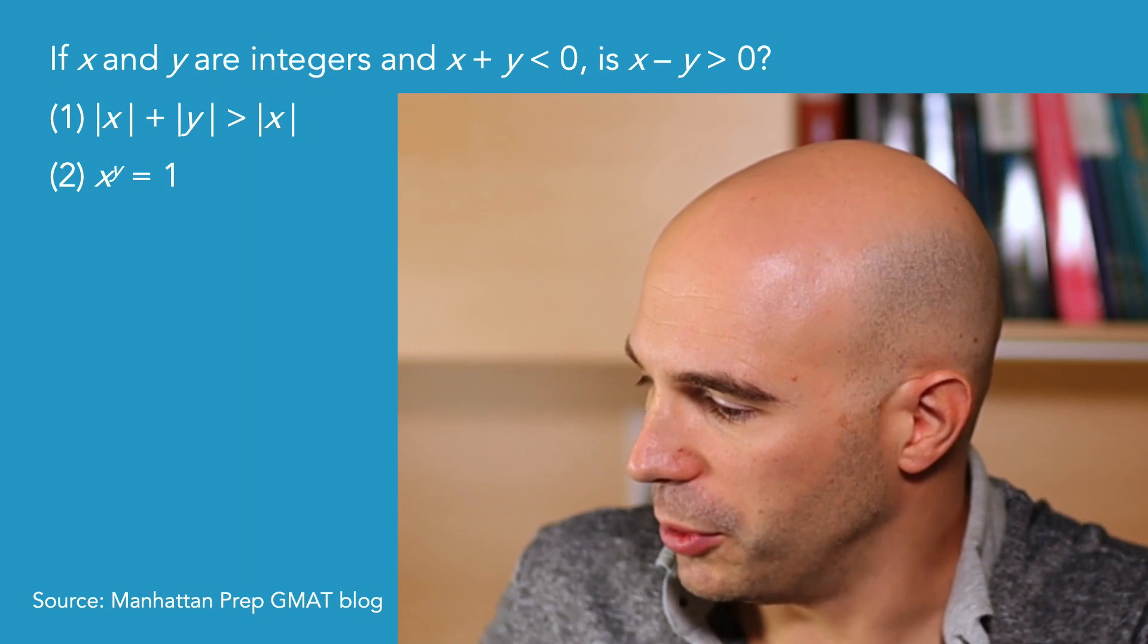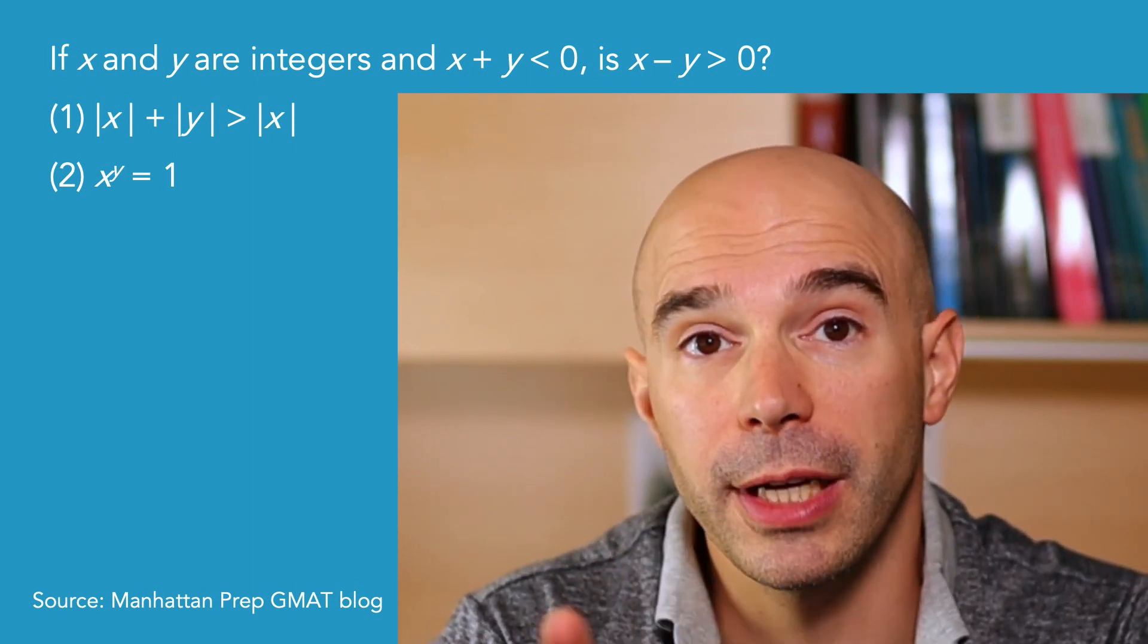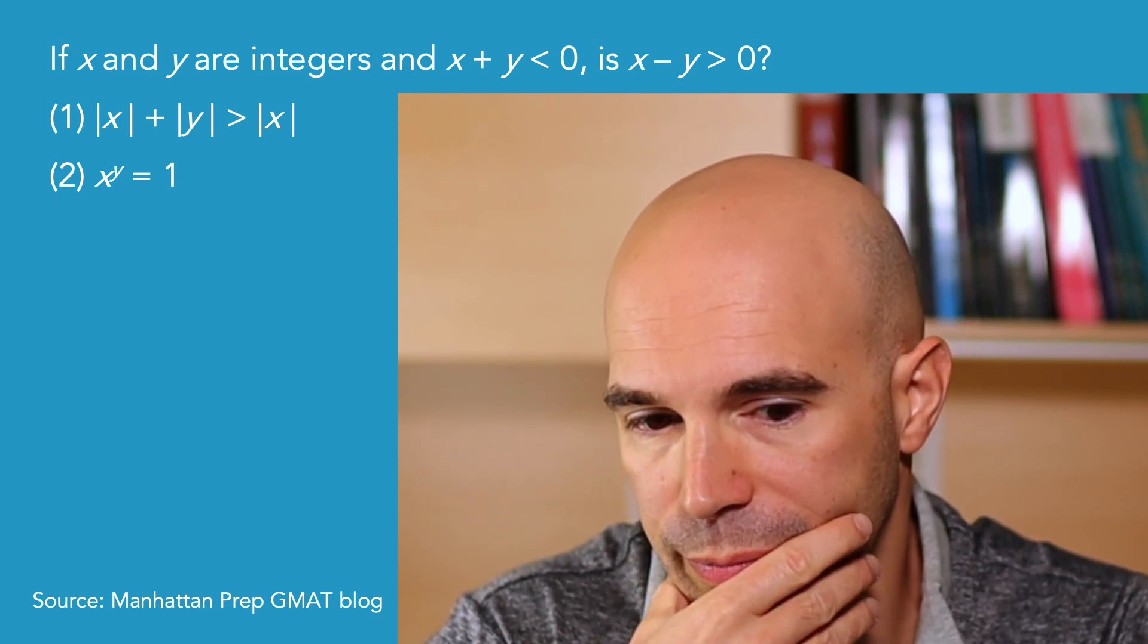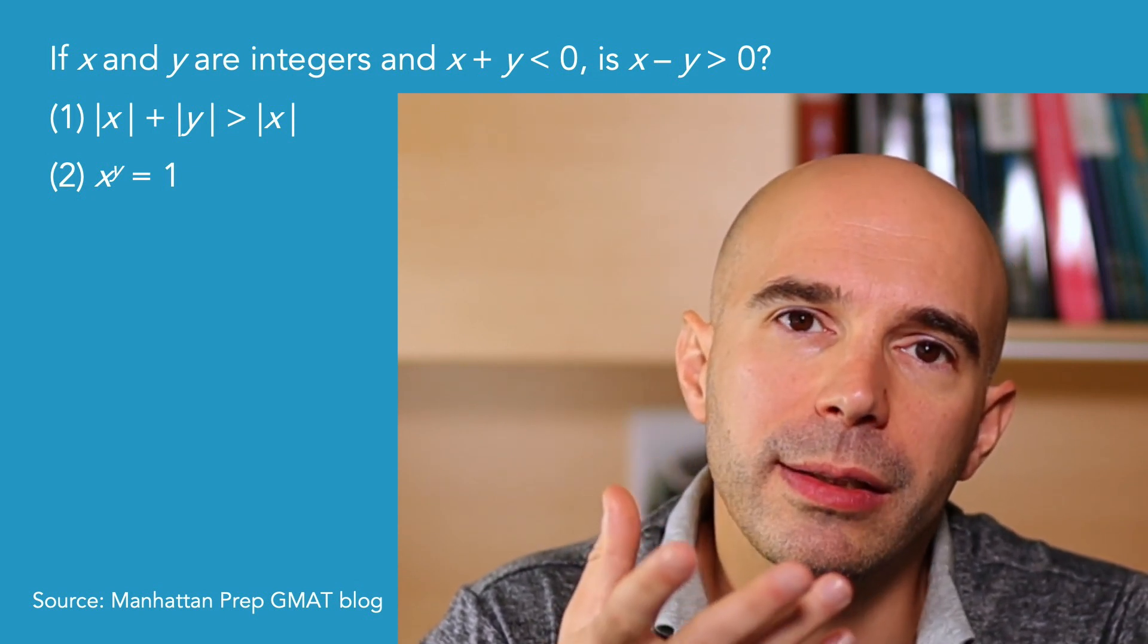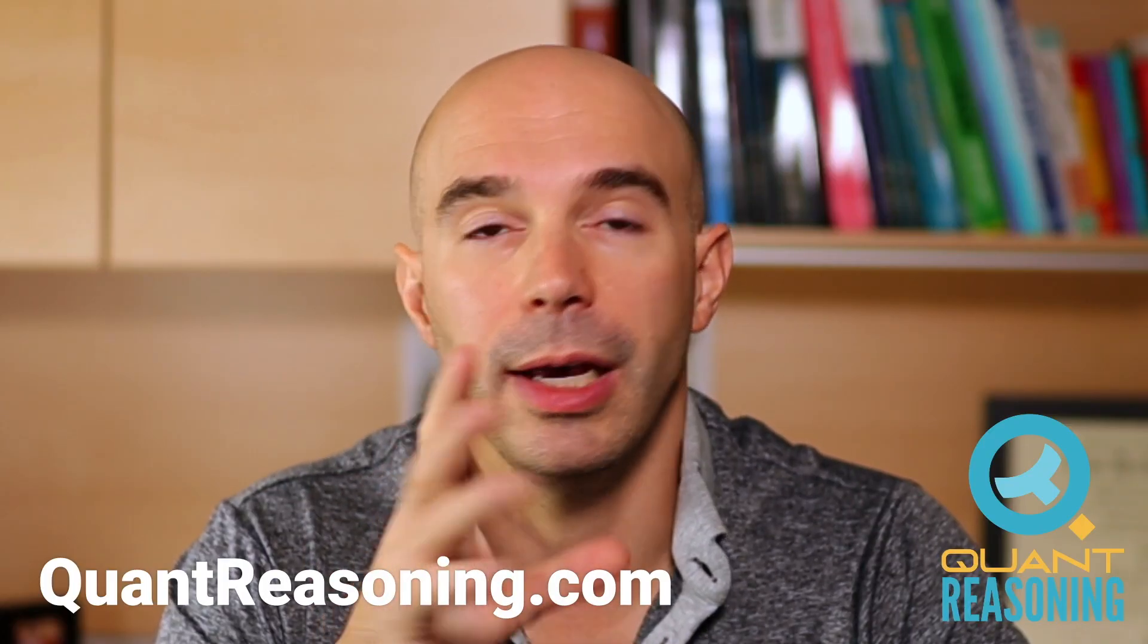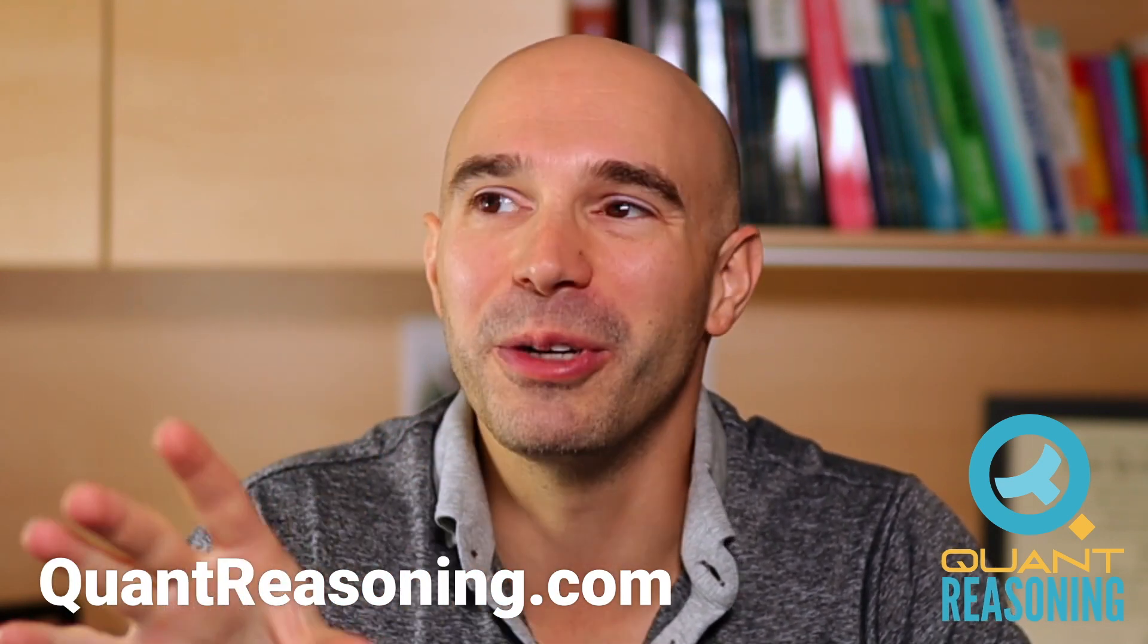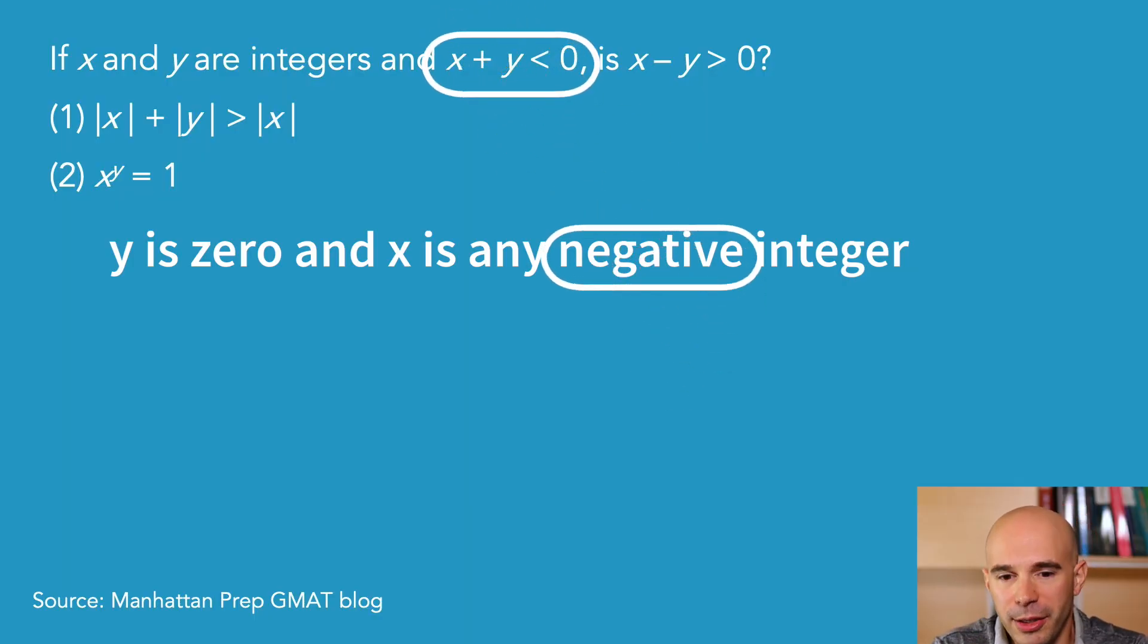So statement two says that X to the power of Y equals one. Now remember we have to forget statement one ever happened, and statement one didn't exist. We're just looking at statement two on its own. Under what circumstances would an exponent be equal to one? If Y is zero, X could be anything. Now I'm starting to realize why statement one was saying that Y isn't zero, right? But we don't know statement one, it doesn't exist.